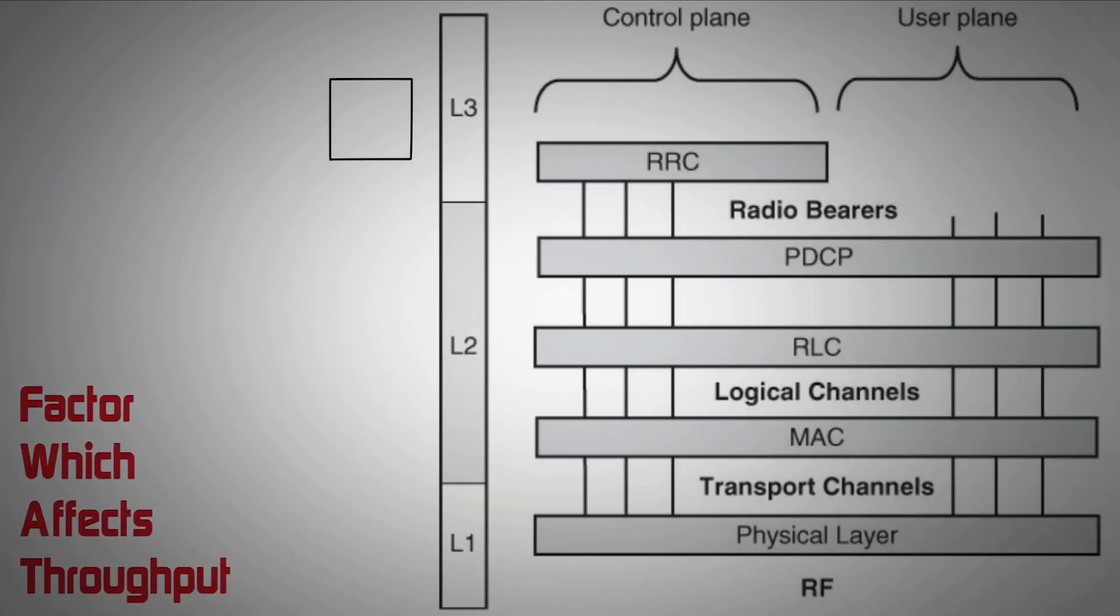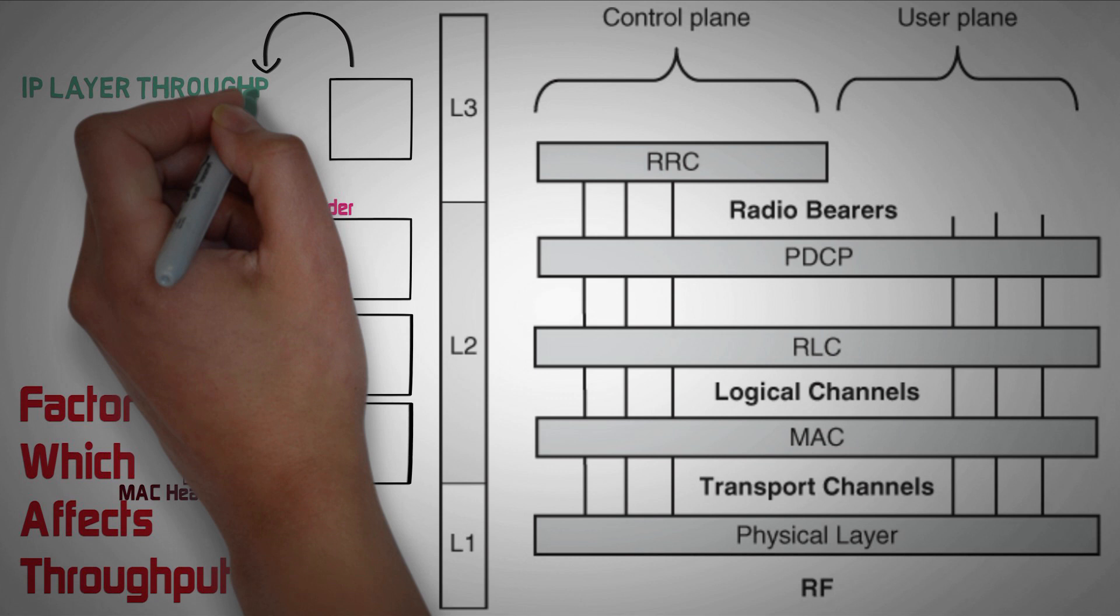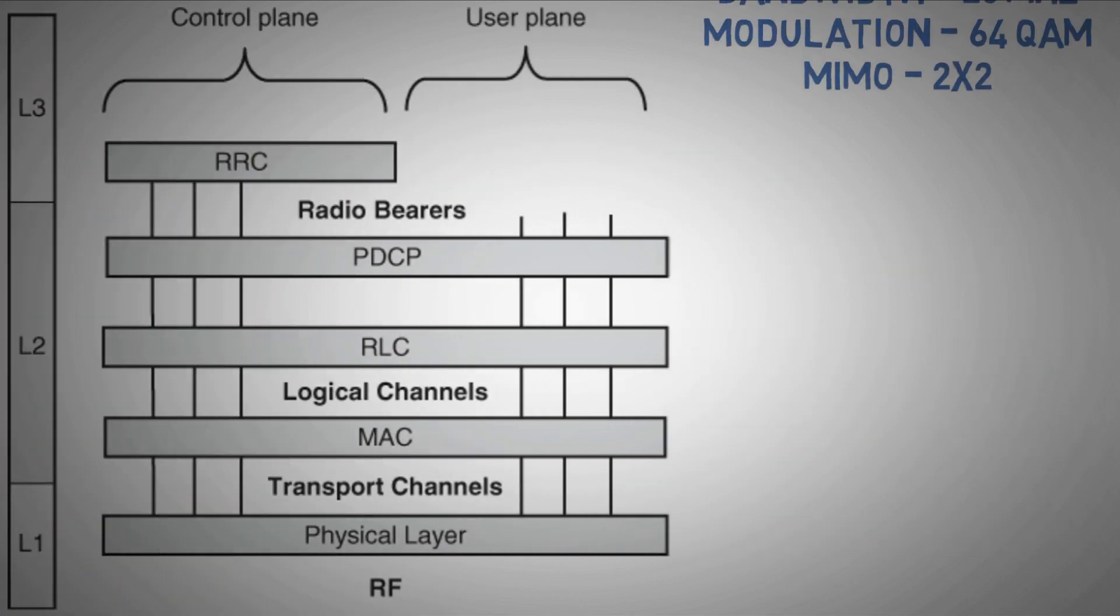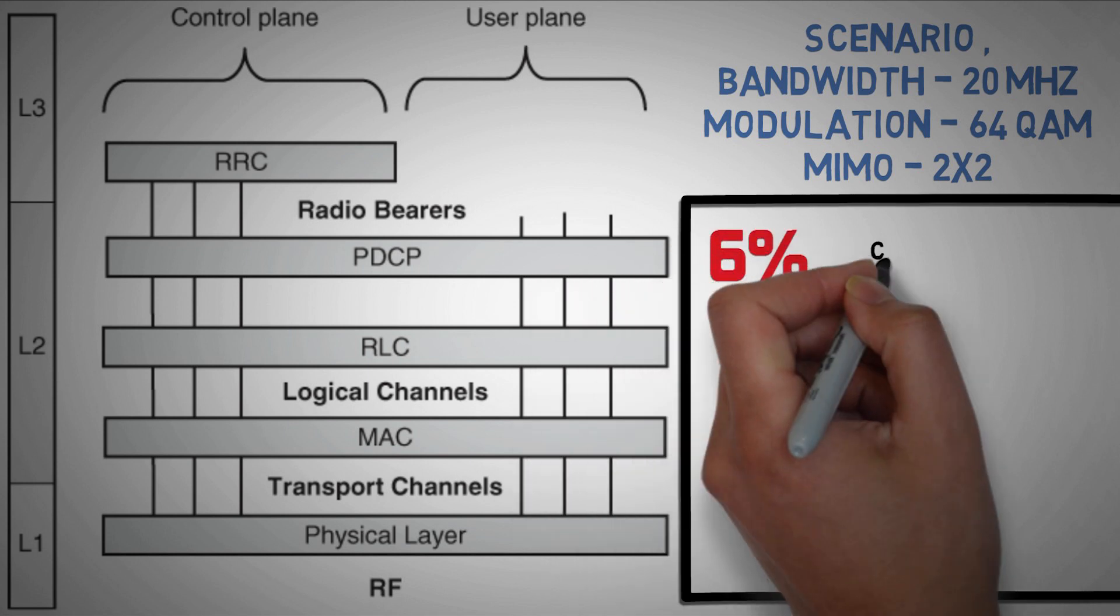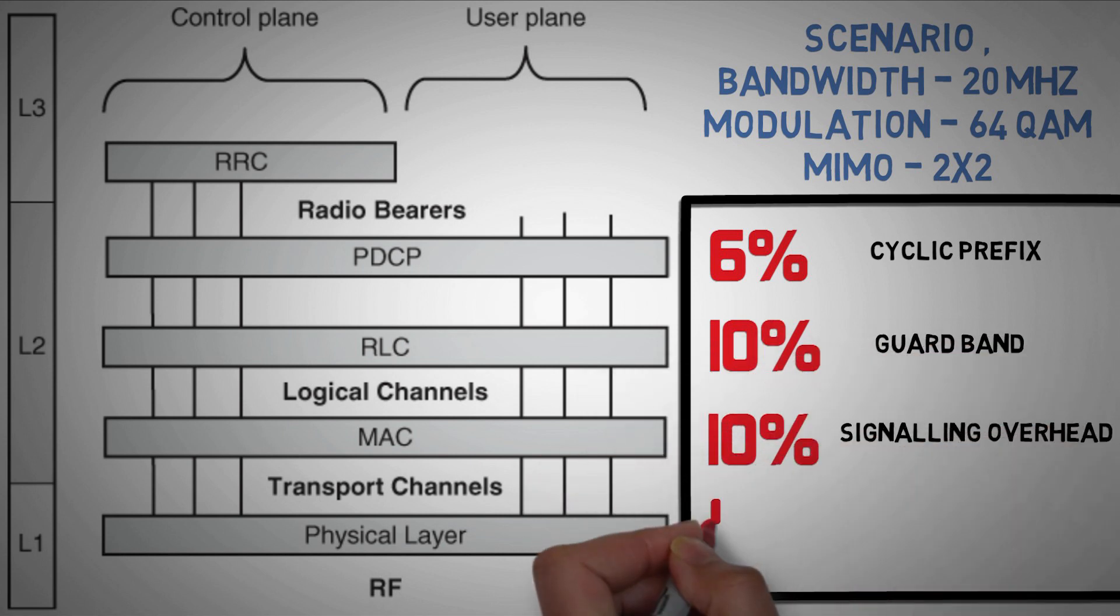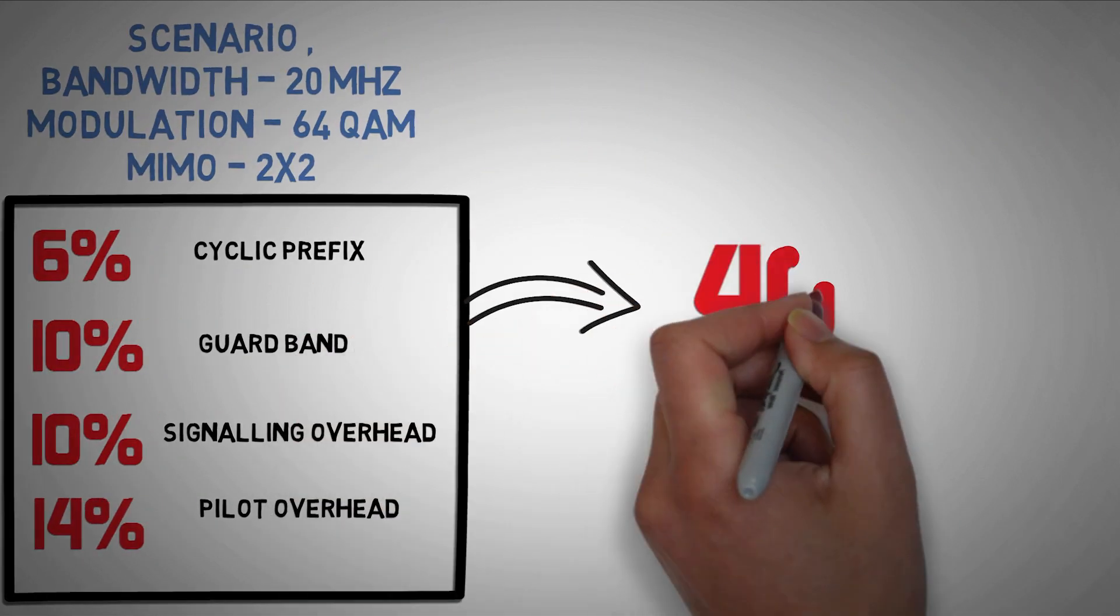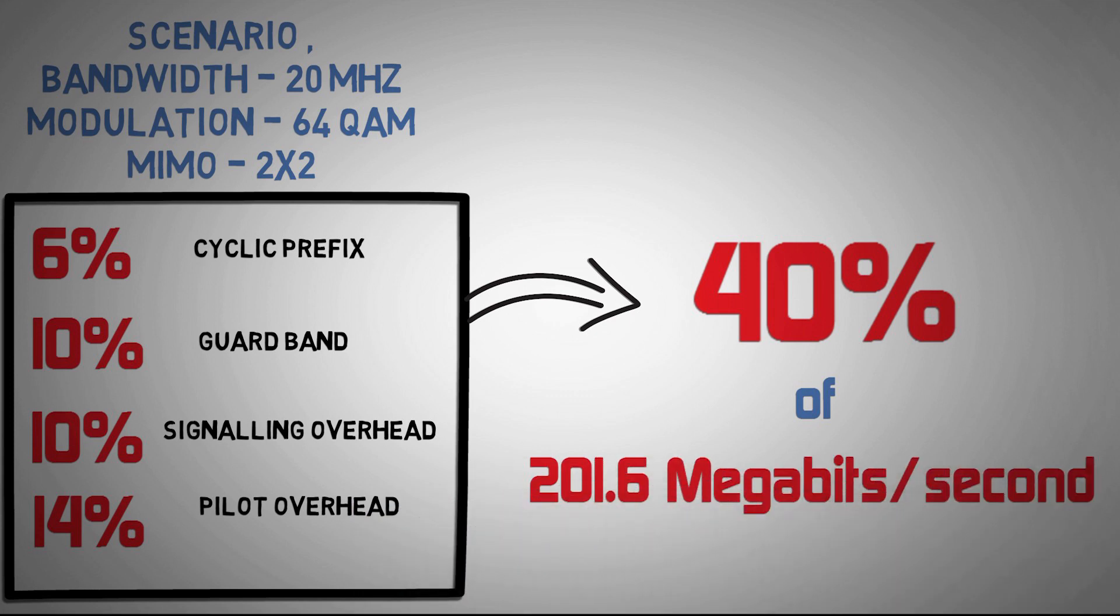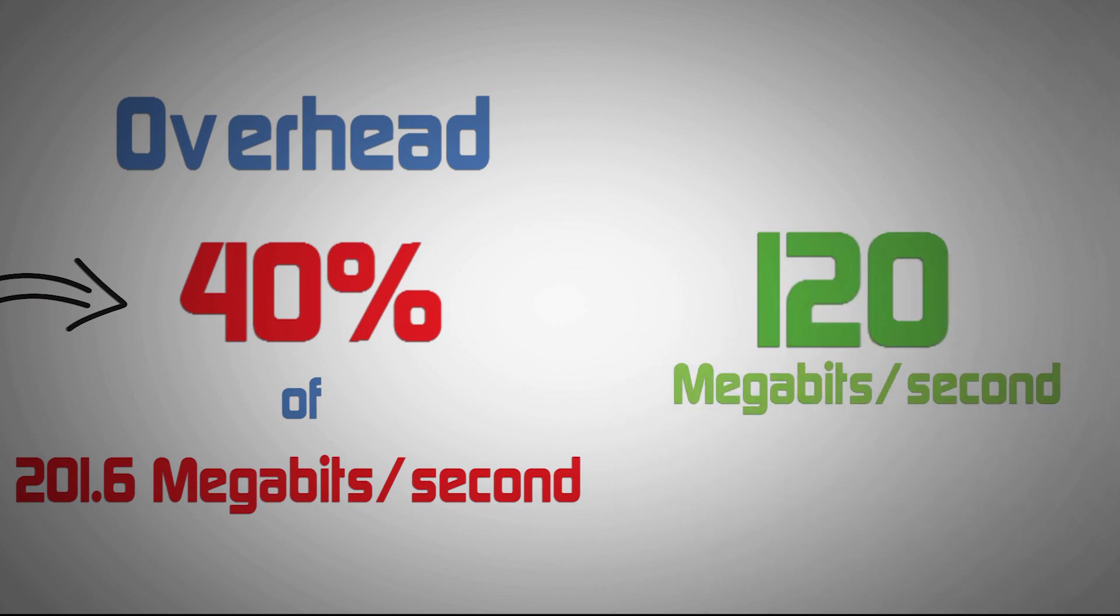When a stream of data comes from IP layer to physical layer, several overheads are added, for example PDCP header, RLC header, MAC header, etc. So the IP layer throughput gets reduced from the physical layer. For the scenarios we've considered, approximately 6% of total resource elements is occupied by cyclic prefix, 10% by guard bands, 10% by signaling overhead, and another 14% for pilot overhead. If we add them all, we can see that 40% of the 201.6 megabits per second is utilized for overheads, thus only 120 megabits per second is available for user data.